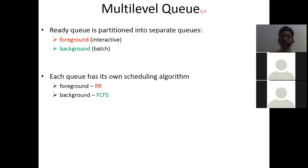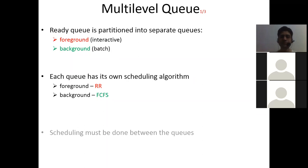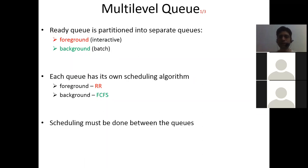This is how each queue has its own scheduling algorithm. Generally, we apply round-robin for foreground and first-come-first-serve for background. Now, scheduling must be done between these queues. We have to give a certain amount of time to foreground or background, or we can assign priorities. So firstly, you have to process the foreground processes, and then you can go to the background.